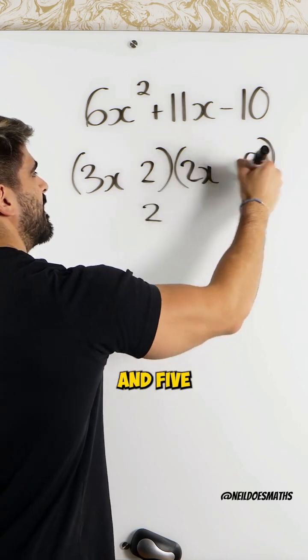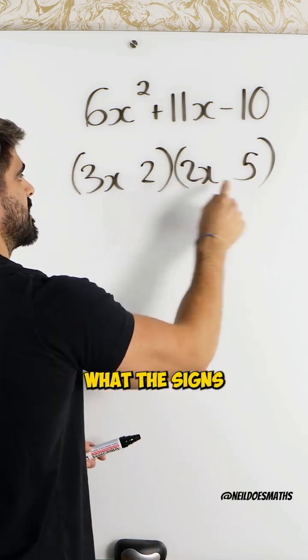So, we have 2 and 5. Now, we then need to check what the signs need to be.